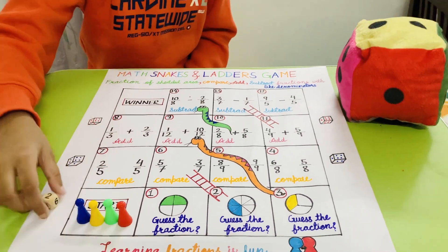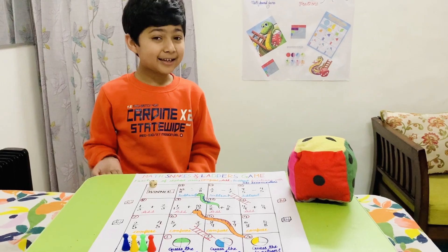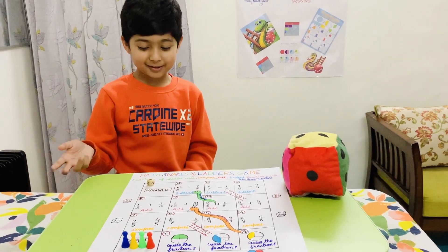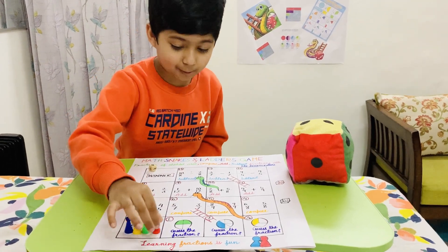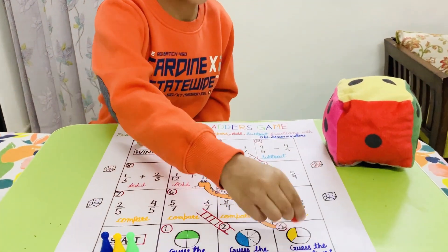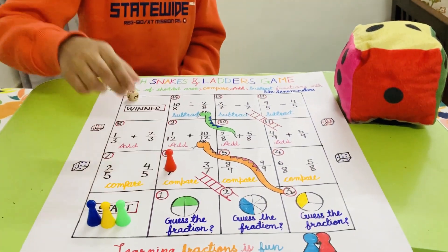To begin the game, roll a dice and move the designated number of spaces between 1 to 6. So, for example, I got number 6. So I'll move 1, 2, 3, 4, 5, 6. Six spaces.